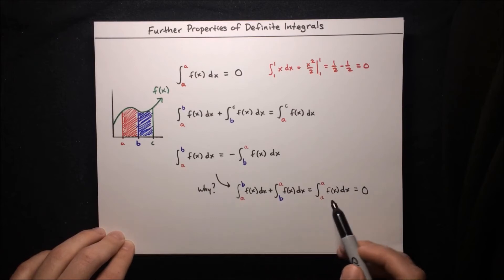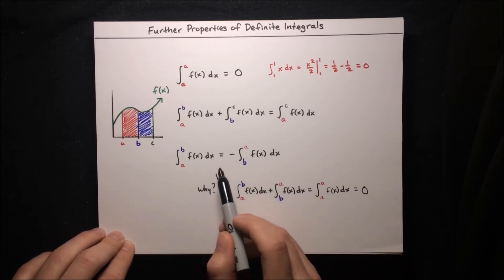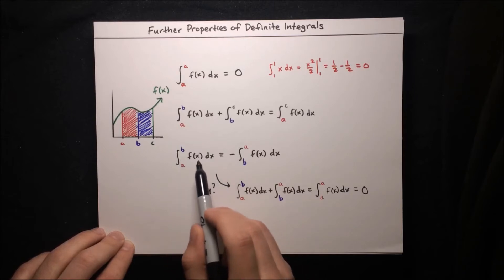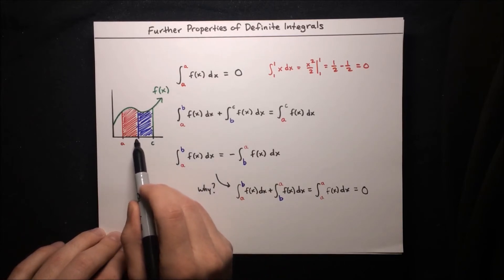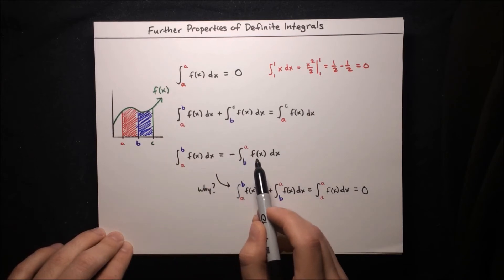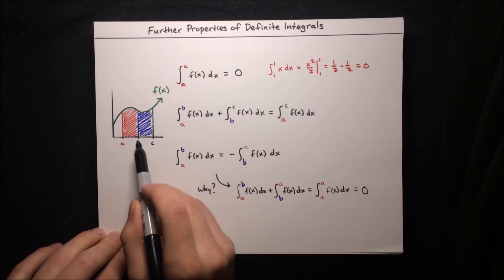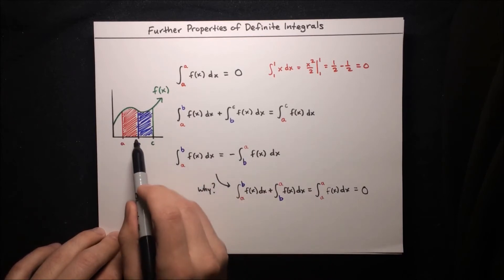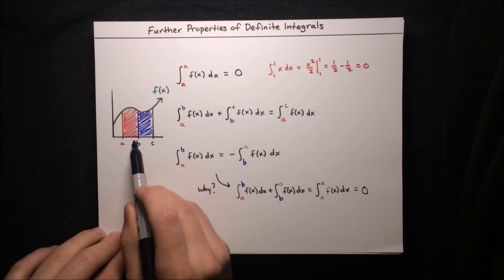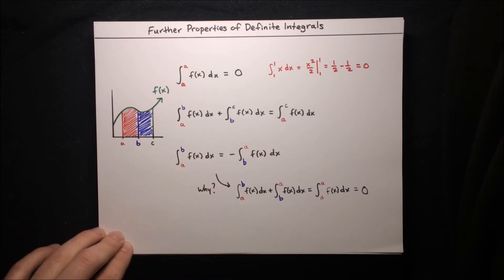There is also some intuitive insight here. The integral from a to b represents the area under f(x) from a to b. The integral from b to a represents the area under f(x) from b to a — it's tracing out that area in reverse, starting at b and going to a. Reverse area can be interpreted as the negative of forward area.